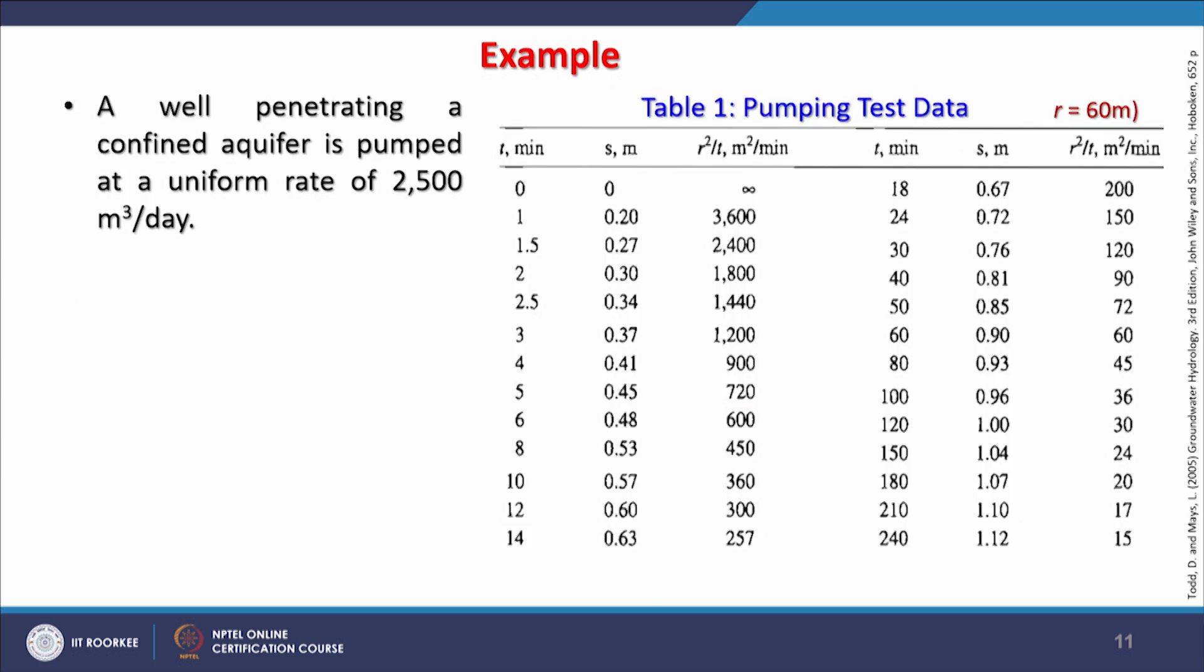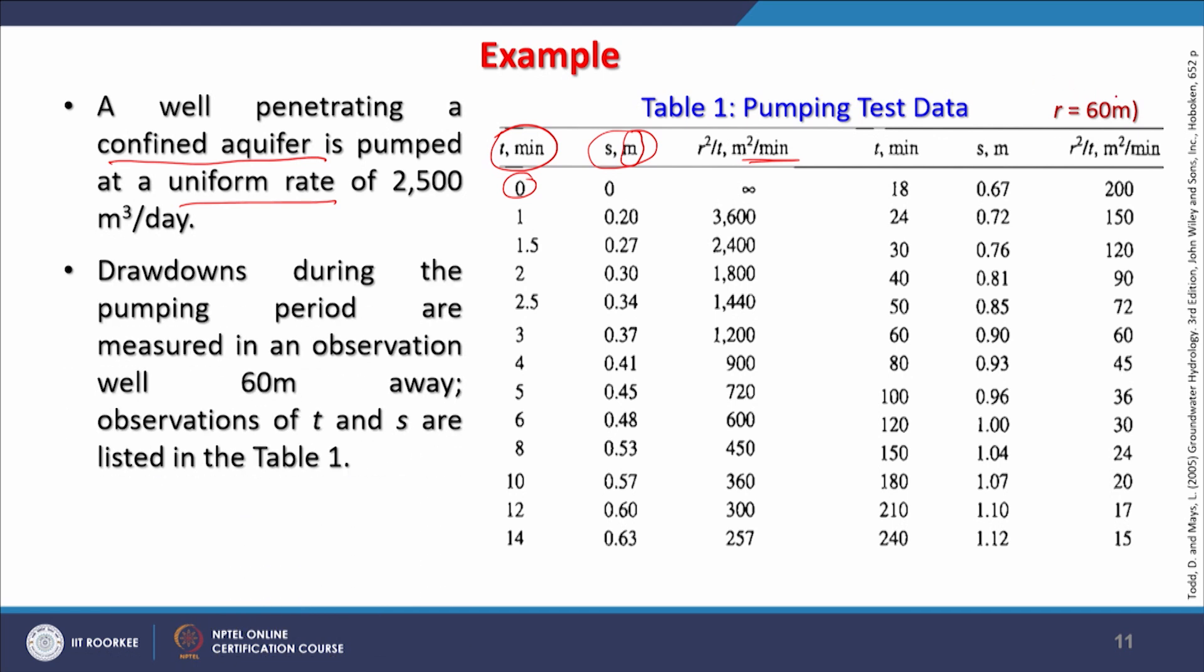Example: A well penetrating a confined aquifer is pumped at a uniform rate of 2,500 cubic meters per day for a very long time with uniform discharge. In confined aquifer conditions, we get all these recordings: t starting at 0.5 minutes, storability s in meters, r²/t in square meters per minute. Their units and r value of 60 meters are given in this example.